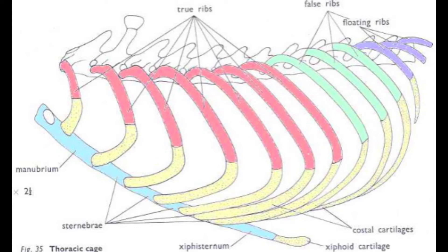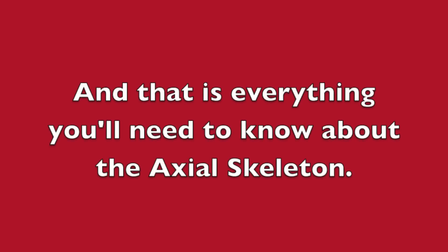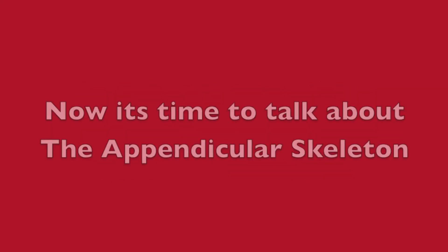A rat has three pairs of false ribs. Floating ribs are highlighted purple, and they have no ventral attachment — thus floating ribs. A rat has three pairs of these ribs. Also, a xiphoid process containing cartilage is attached to the xipho-sternum. And that is everything you'll need to know about the axial skeleton.